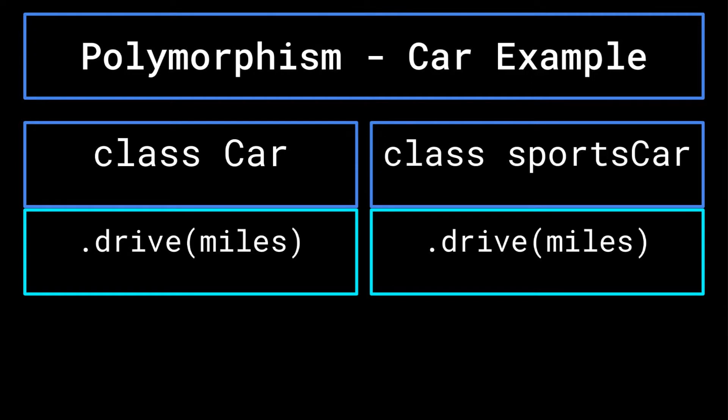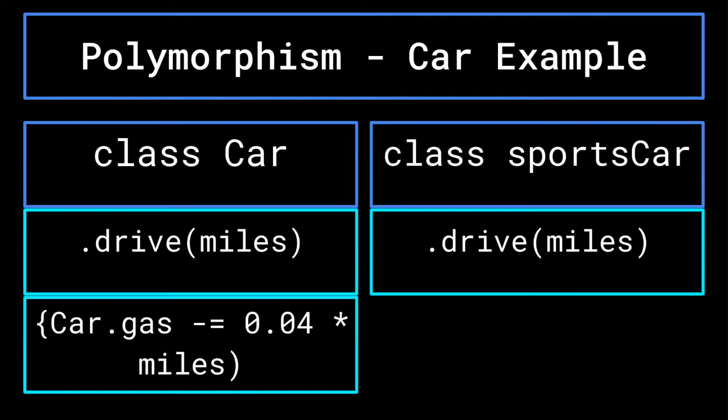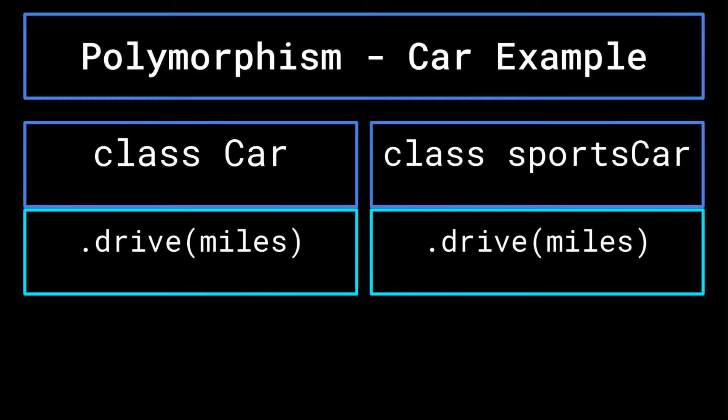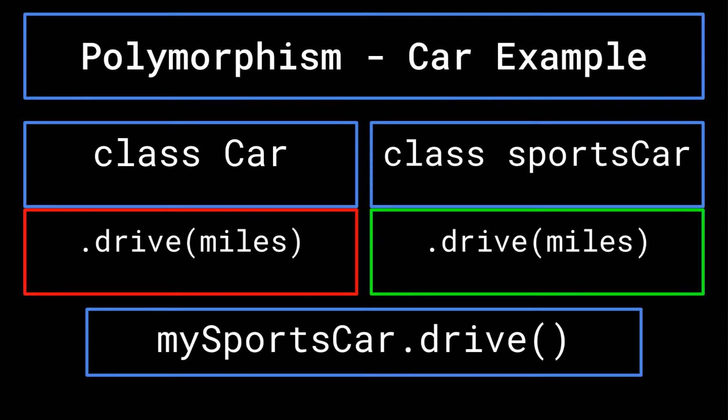In the car class, the dot drive function may cause the car's gas to decrease by 0.04 gallons per mile, whereas the sports car class may instead have its gas decreased by 0.02 gallons per mile. If you create an instance of a sports car called my sports car, the sports car implementation of the dot drive method will override the generic car version of the dot drive method. Therefore, my sports car dot drive will decrease my sports car's gas attribute by 0.02 gallons per mile.